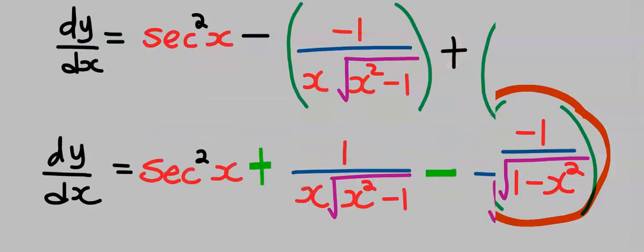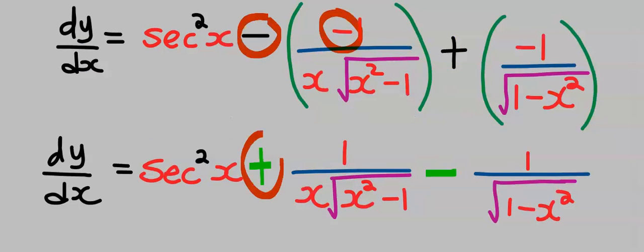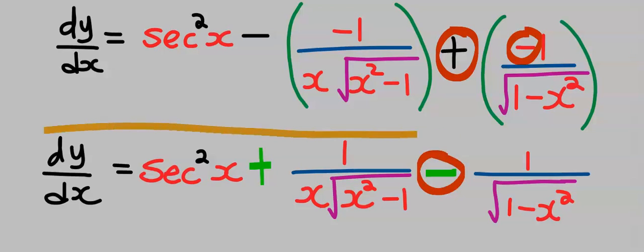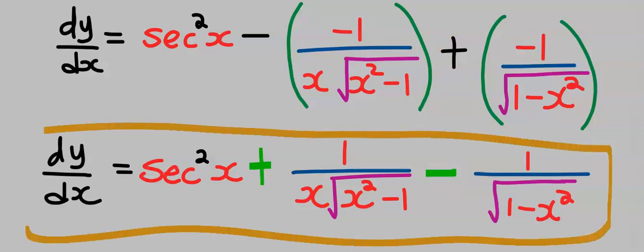Cleaning up our results: minus multiplied by minus gives plus, and minus multiplied by plus gives minus. And this becomes our dy/dx.